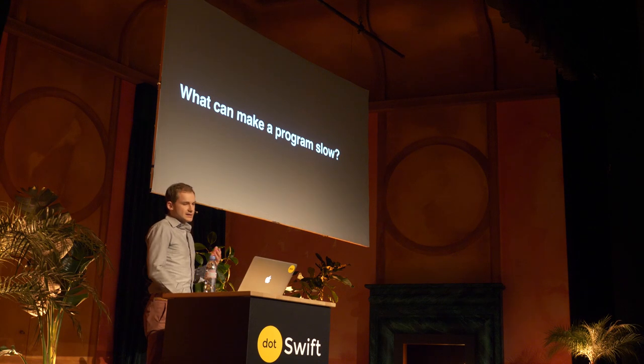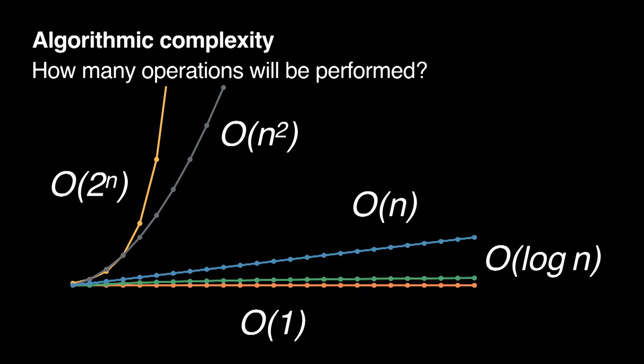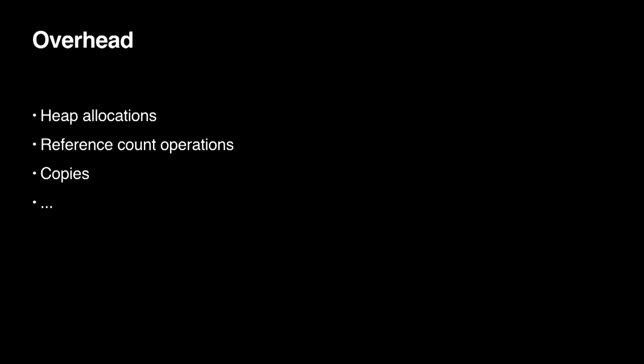When we talk about performance, we want to understand what makes programs go slow. By far, the most driving factor is probably the algorithm complexity. If you accidentally use an algorithm that should be constant time O(N), but instead use one that is O(N²), then you'll lose. Nothing we'll see later on today will really help you — you need to get your algorithms right. However, if you've got everything right, your program can still not be as fast as you'd like, and one reason for that can be overhead.